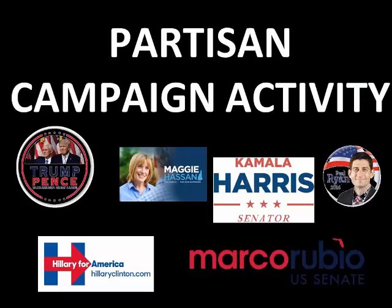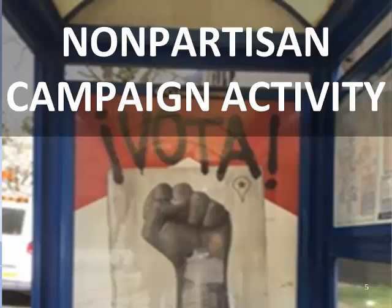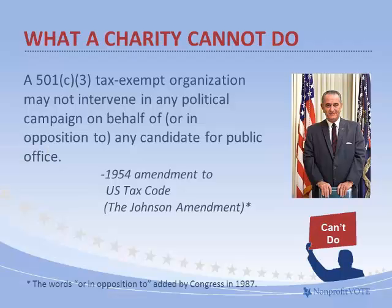Let's start with what a 501c3 charity cannot do — and something that you can do. We're going to dig into this by starting with the Johnson Amendment. Here are the basics of the electioneering prohibition, directly from Section 501c3 and the accompanying treasury regulations. In order to qualify as tax-exempt as a charity under the Internal Revenue Code, the organization may not participate in or intervene in any political campaign on behalf of, or in opposition to, any candidate for public office. This was added to the tax code in 1954 and is often referred to as the Johnson Amendment.